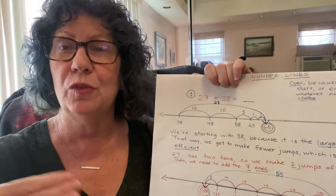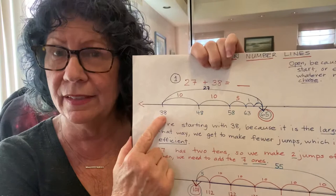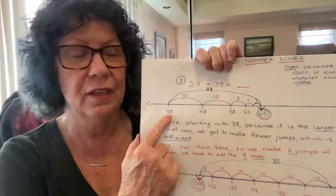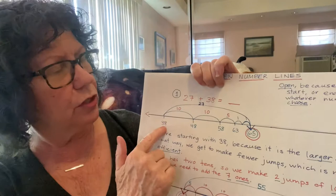So, for example, we have 27 plus 38. Now we're starting with 38 here because that's the larger addend. The two numbers we're adding together are called addends. And this is vocabulary your student knows. We start with the larger one because that's more efficient. That means we have to make fewer jumps. And because we're adding the numbers 27 and 38, we're going to start at 38.